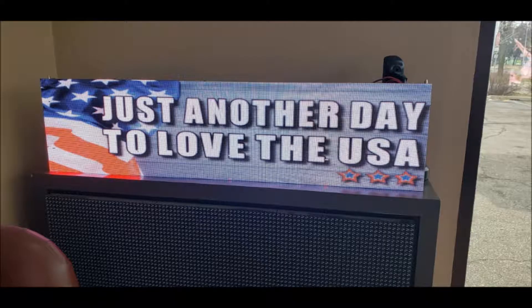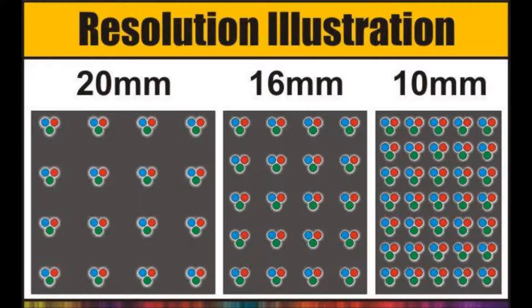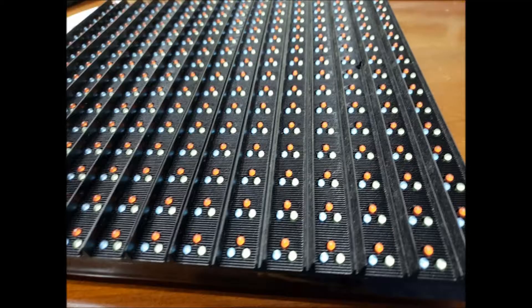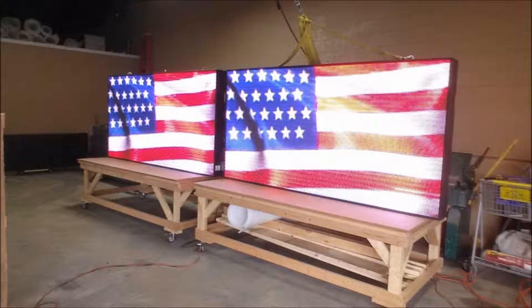The resolution is increased or decreased by how far each pixel is from one another. Hence when you hear 20mm, 16mm, 13mm, 10mm resolution, and so on — this is referring to the actual distance between pixels. A 10mm display means the pixels are 10mm apart. The larger the number, the farther the pixels are apart, and the lower the resolution. Therefore a 10mm display is higher resolution than a 20mm display.